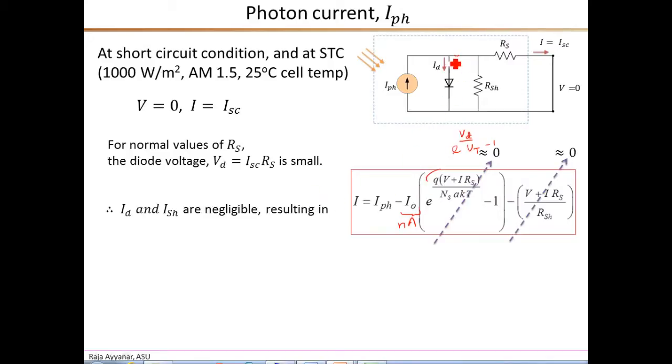Similarly, by the same argument, since VD or the voltage across the shunt resistance is very small, the shunt current is also negligible, close to 0. Therefore, what we see from this equation for the current is that under short-circuit current condition, the I is ISC, and that is simply equal to the I photon. So therefore, our first equation for parameter extraction is that I photon is simply equal to the short-circuit current ISC. Now, of course, since ISC is given only at STC, the I photon estimated is also corresponding to just the standard test conditions.